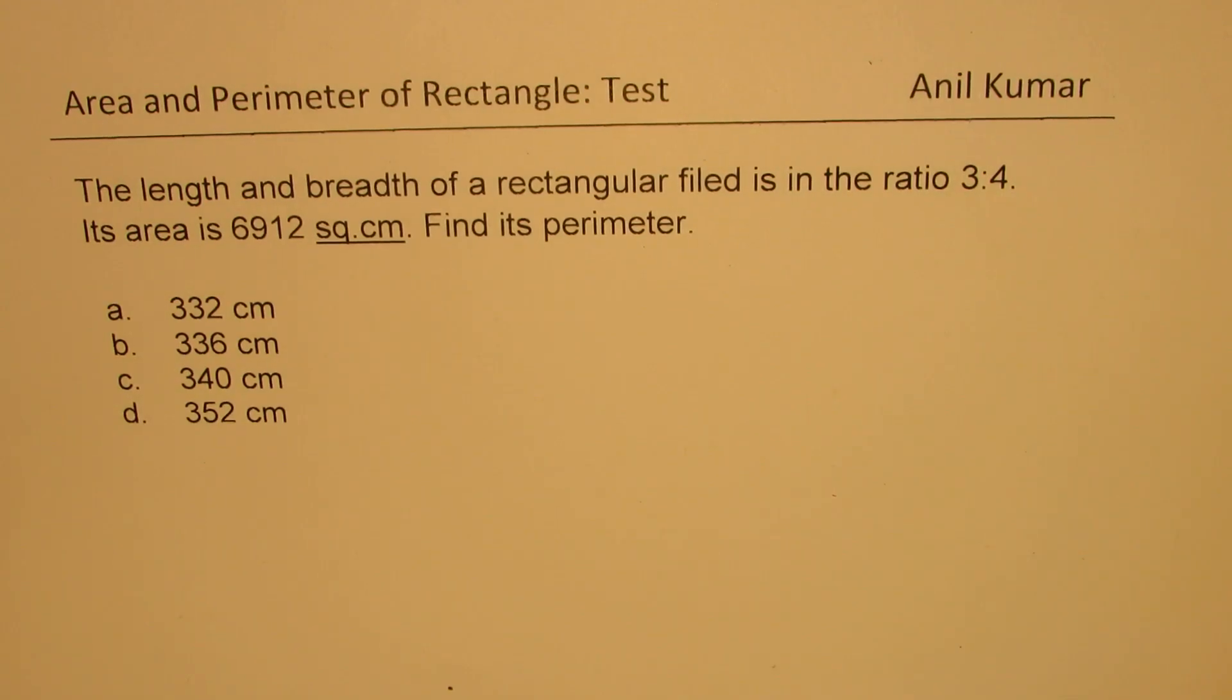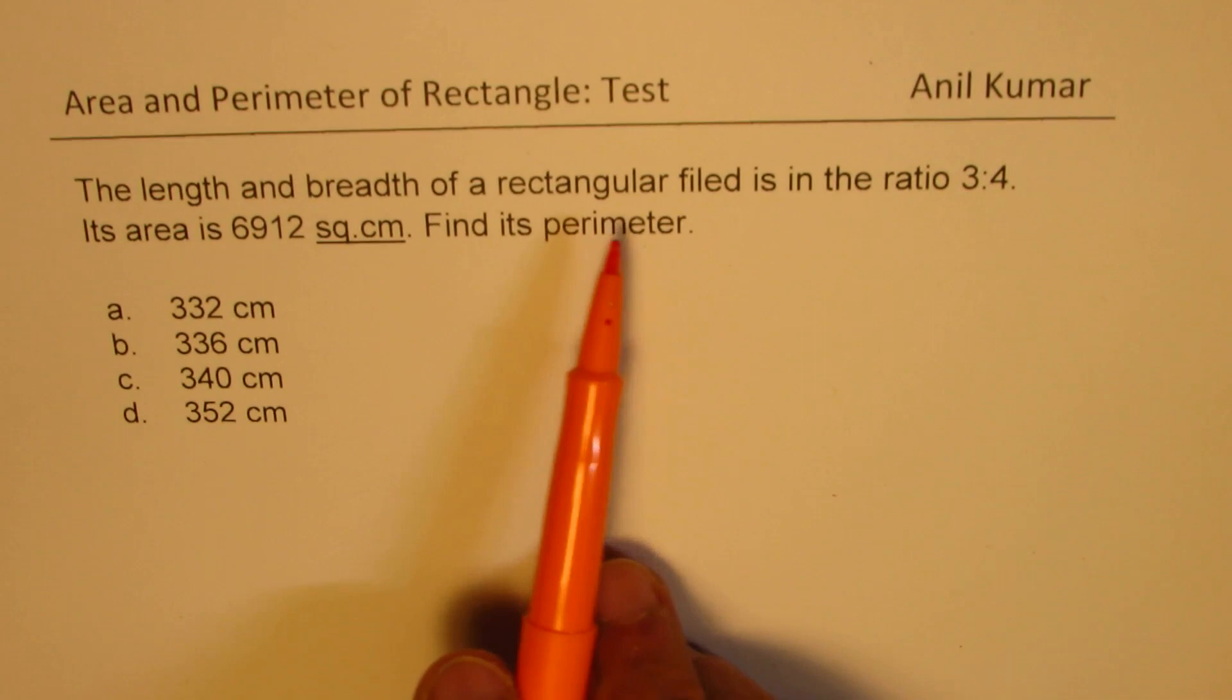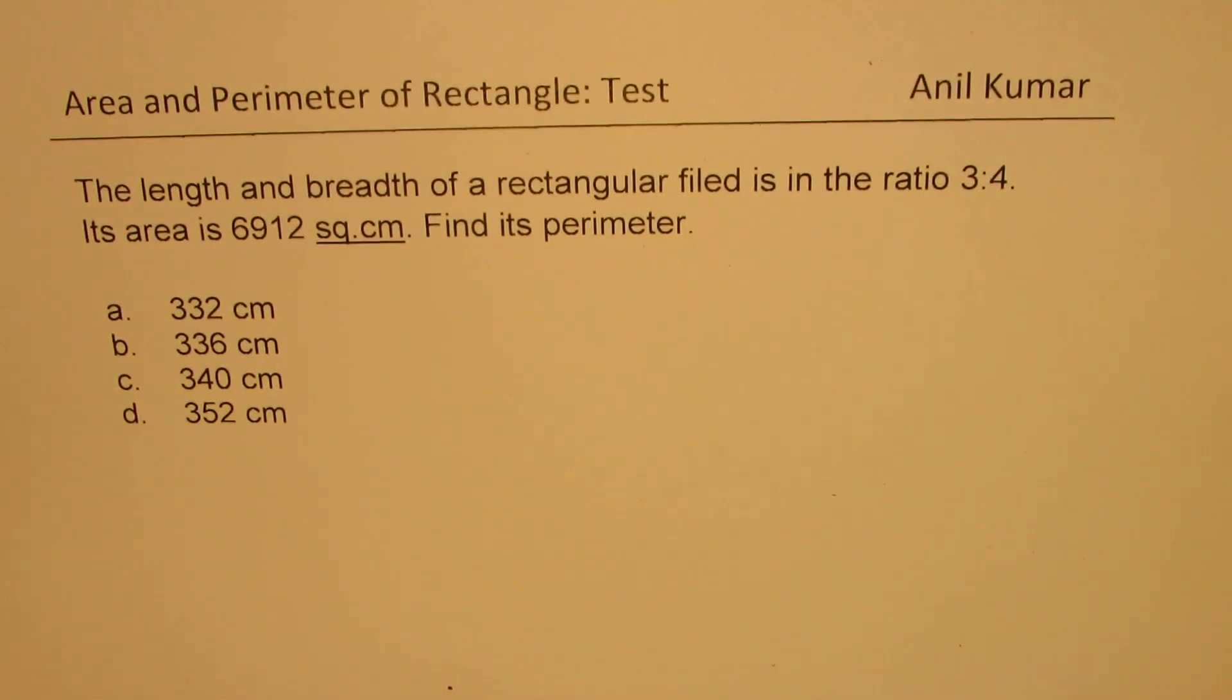We have a couple of multiple choice questions for you. In this video, we'll understand how to answer a question based on area and perimeter of a rectangle. The question here is, the length and breadth of a rectangular field is in the ratio of 3 to 4.